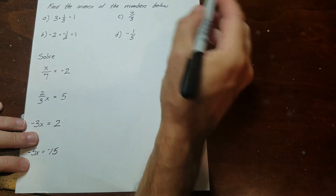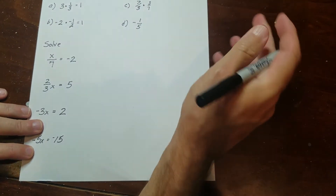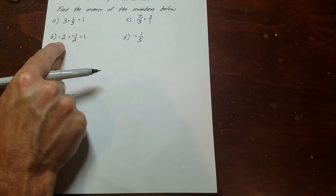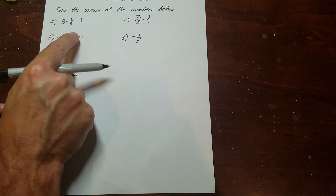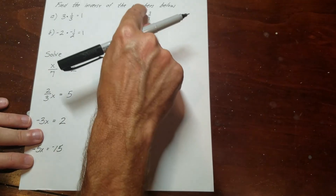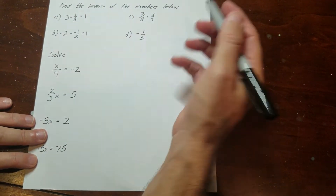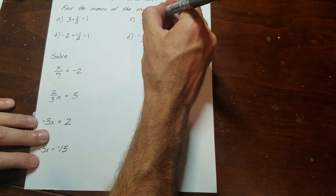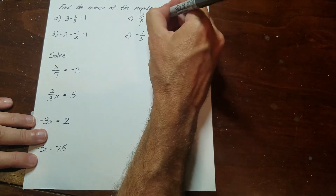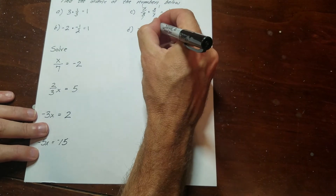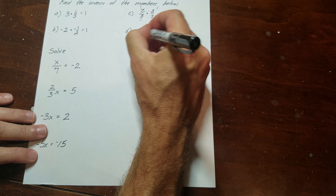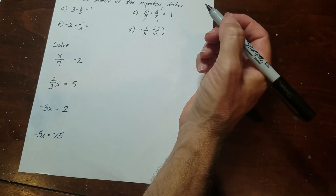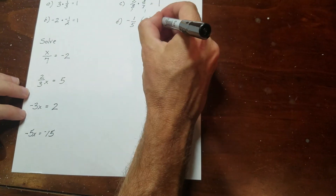The inverse of 7 over 3 is 3 over 7 — the fractions flip. Remember, 3 is 3 over 1, so its inverse is 1 third. Negative 2 is negative 2 over 1, so you can see it's just the fraction flipped over. With 7 over 3 and 3 over 7, these cross-cancel to 1. And the multiplicative inverse of negative 1 fifth would be negative 5, and that product is also 1.